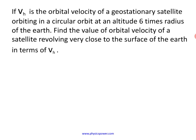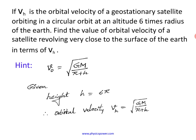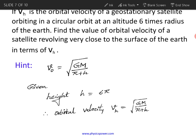Next problem. If Vh is the orbital velocity of a geostationary satellite orbiting in a circular orbit at an altitude 6 times the radius of the earth, find the orbital velocity of a satellite revolving very close to the surface. This time they gave the orbital velocity at a particular height. H = 6R, so Vh = square root of GM/(r + h) = square root of GM/7R.